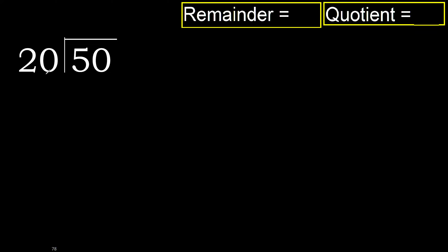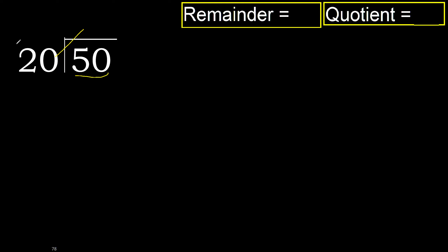50 divided by 20. 5 is less, therefore next. 50 is not less, therefore work with 50. Find which number 20 multiplied by is nearest to 50 but not greater.